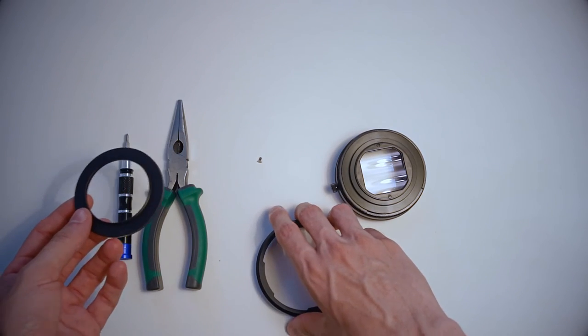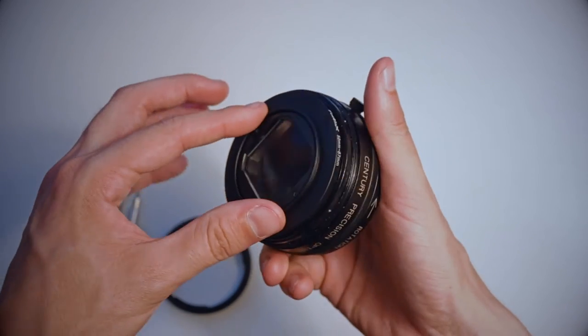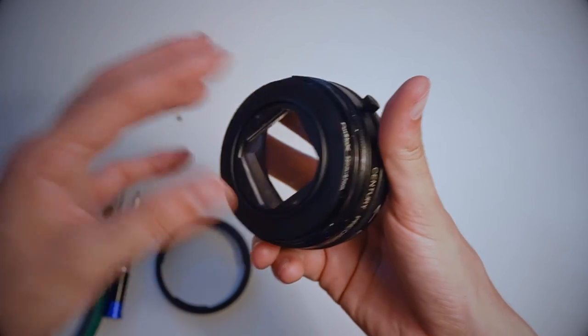Luckily for us, the Sony version just needs you to sandwich the step ring between the main body of the lens and the lock, like this.